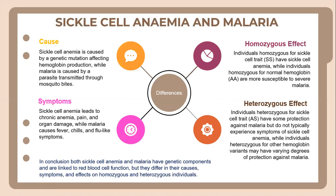Let's look into the differences between sickle cell anemia and malaria. The cause of sickle cell anemia is a genetic mutation affecting hemoglobin production. Meanwhile, malaria is caused by a parasite transmitted through mosquito bites. The symptoms for sickle cell anemia include chronic anemia, pain, and organ damage. Meanwhile, malaria causes fever, chills, and flu-like symptoms. For the homozygous effect, individuals homozygous for the sickle cell trait have sickle cell anemia, while individuals homozygous for normal hemoglobin are more susceptible to severe malaria.